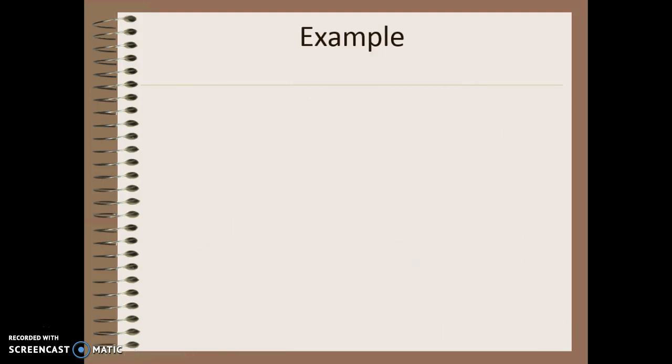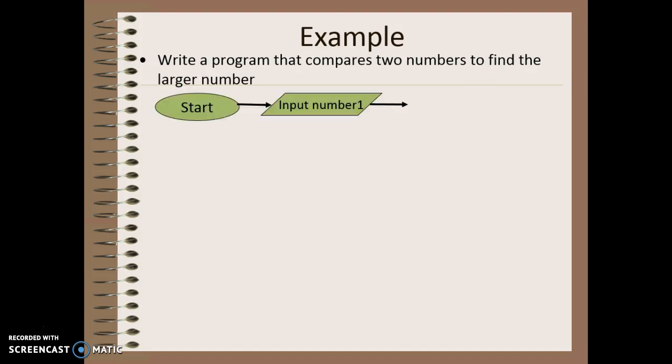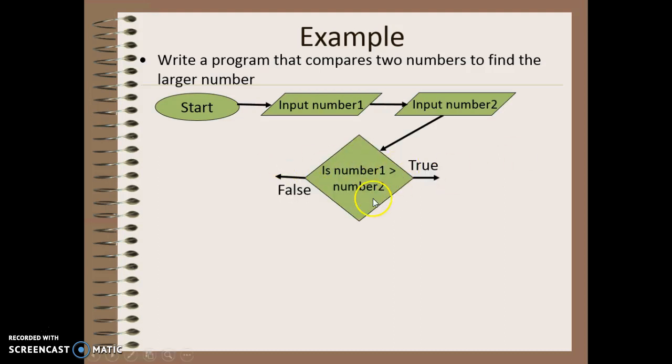Let's try another example where we have more than just one option. We're going to compare two numbers to find the larger number. I input the first number, I input the second number, and then I'm going to check.